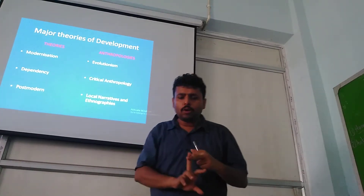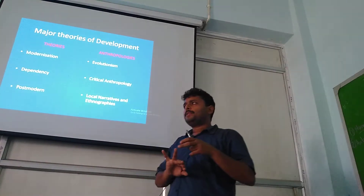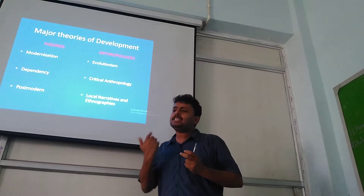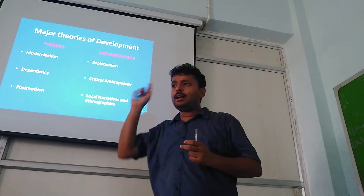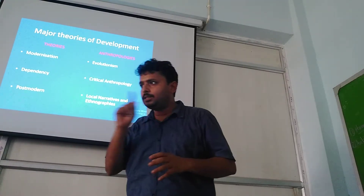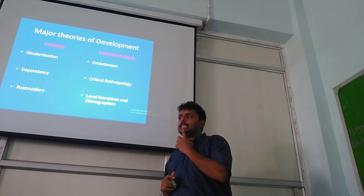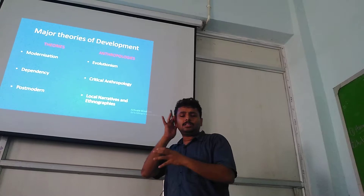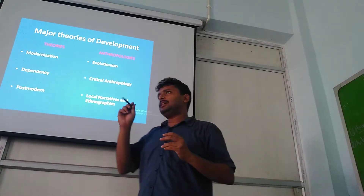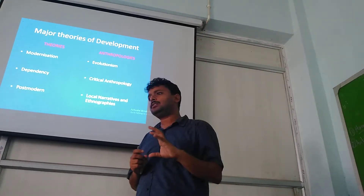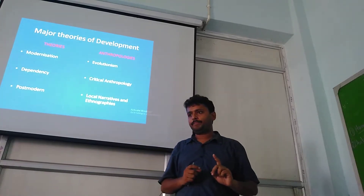Number one, the poorer nations like African countries, India, or Bangladesh are becoming increasingly dependent on the advanced countries. Number two, this dependency is so severe that if those agencies stop giving them money, they will simply start to deteriorate. Number three, they argue that the entire world is becoming a single system.